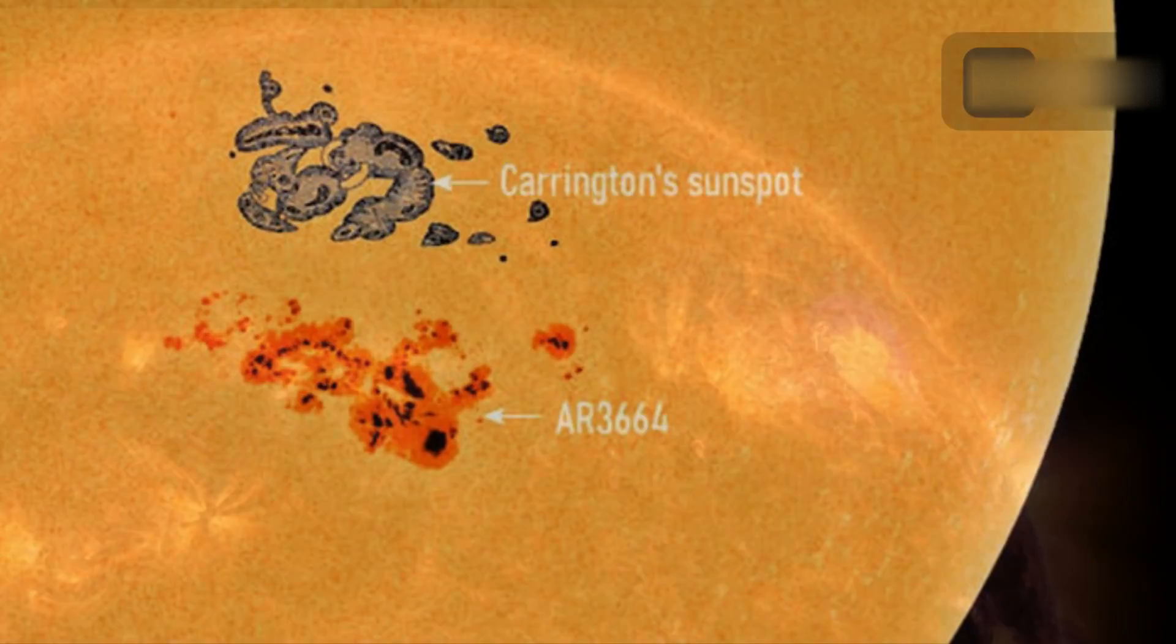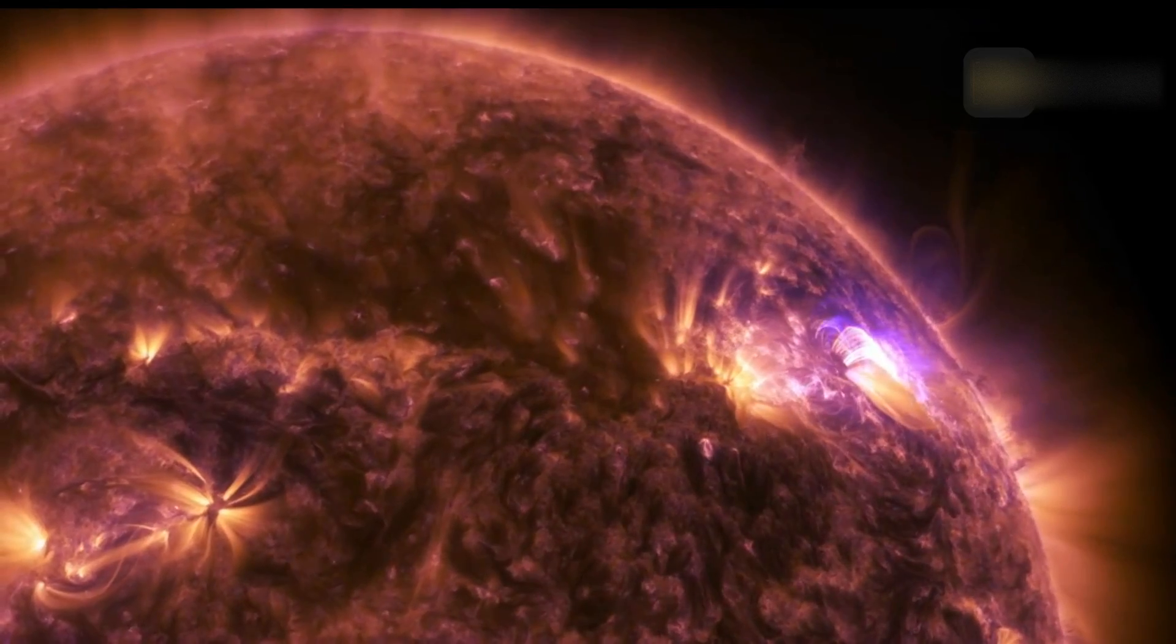A gargantuan sunspot, 15 Earths wide, shot a powerful X-class flare toward Earth, triggering radio blackouts.